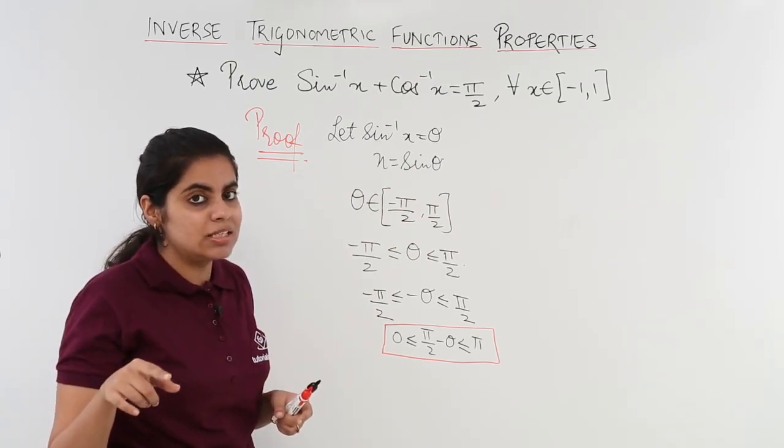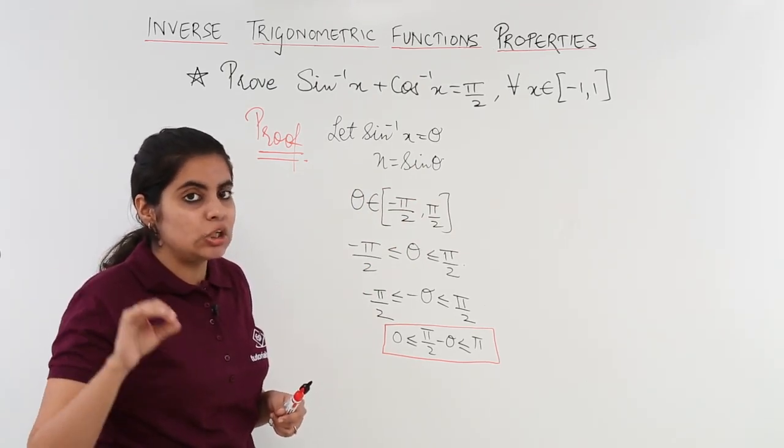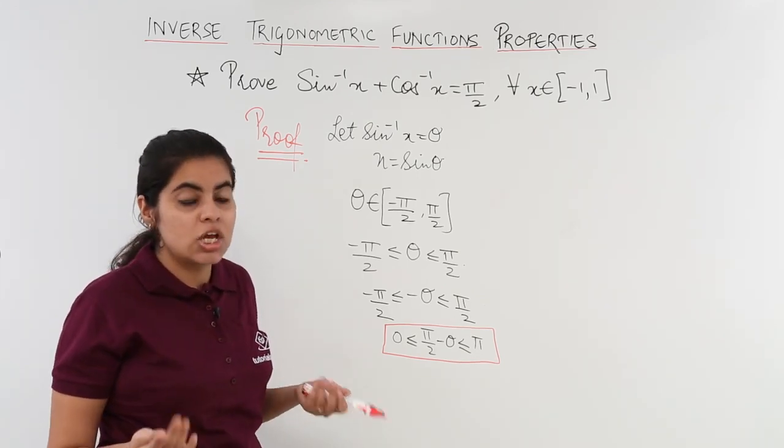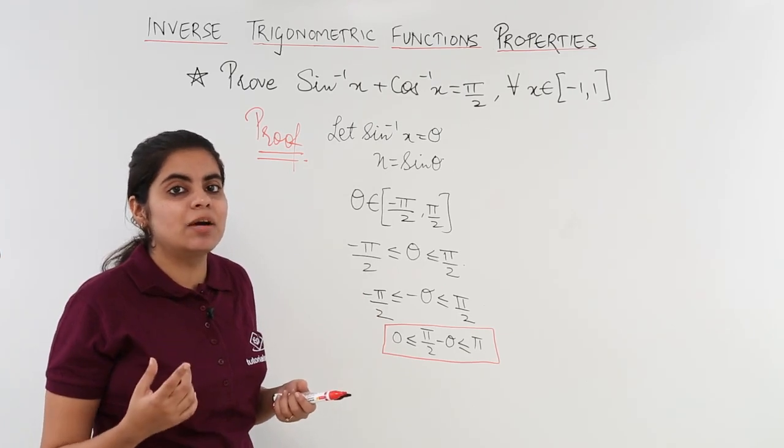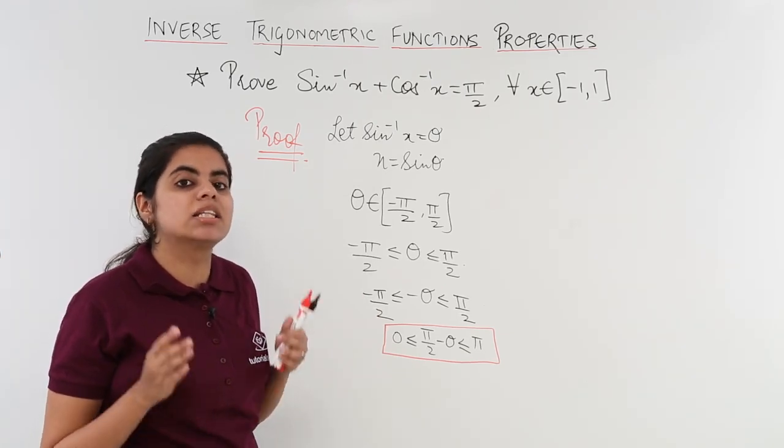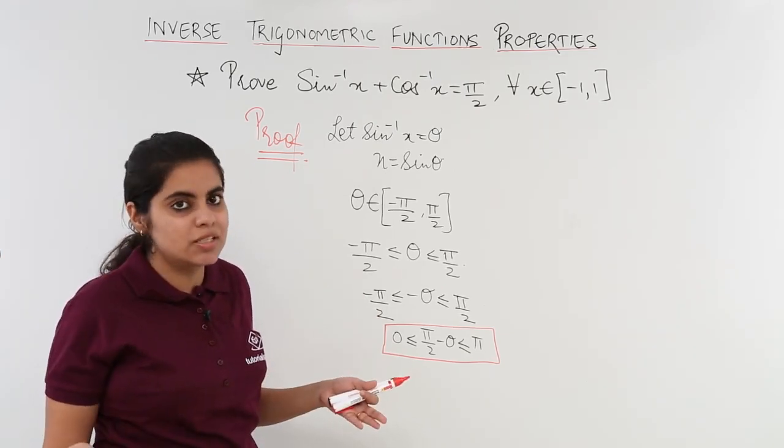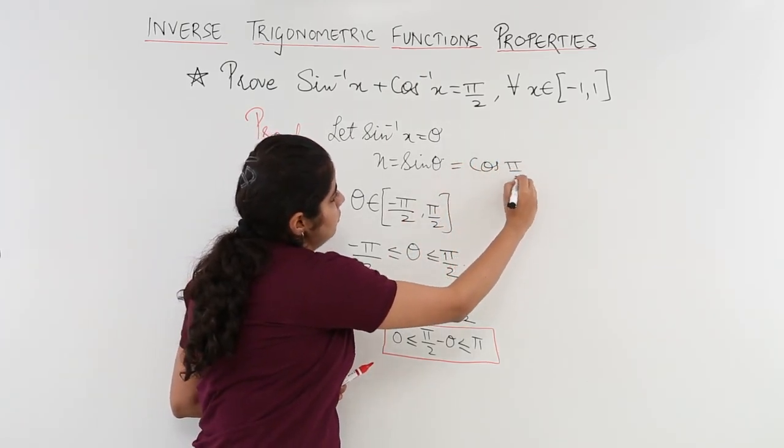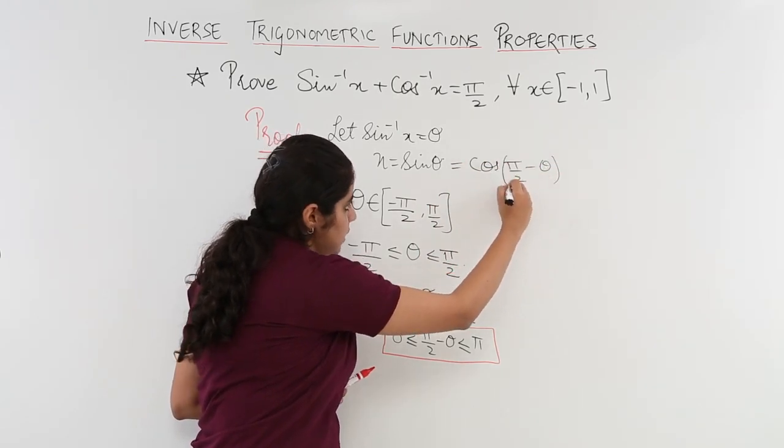I know sin theta is positive and cos 90 minus theta is also sin theta because cos 90 minus theta means sin theta and it is in the first quadrant so it is always positive. So I can also write sin theta as cos 90 minus theta.